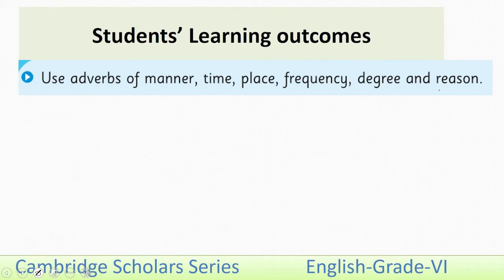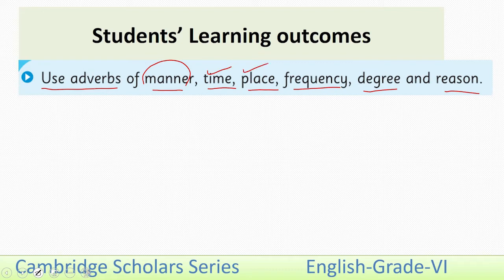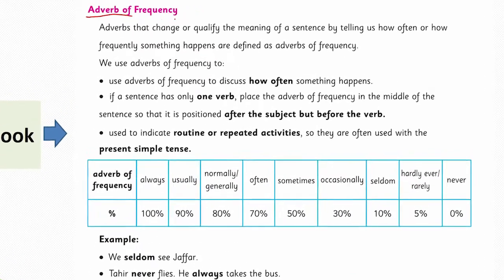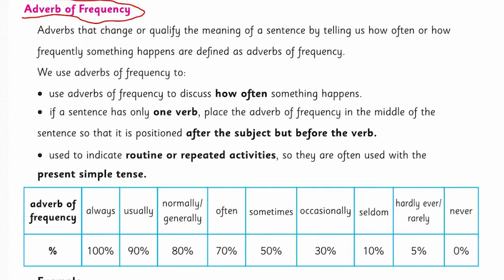The SLOs of this lesson are to use adverbs of manner, time, place, frequency, degree, and reason. In our previous lessons we have learnt the use of adverbs of manner, time, place, and degree. Today we are going to learn the use of adverbs of frequency. On page 71 of your textbook: an adverb is a part of speech which modifies an action. It tells you when, how, to which extent, why, in which degree, and in which frequency an action has been done.